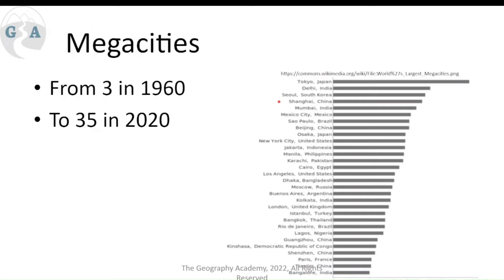Middle-income countries like China, for instance, have multiple urban areas. Now the second biggest population in the world, China was not on the mega cities list in 1960 but is continuing to add to it. India also appears multiple times, with different economic cores scattered throughout the country, including Delhi. Some countries have a growing urbanization but may only have one major mega city so far, like Manila, Jakarta, and Istanbul.